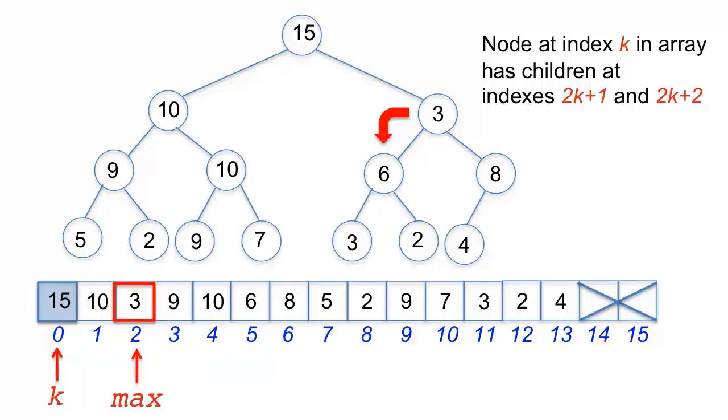Sift-down will now continue one level down in the heap. Correspondingly in the array, the tracking index k will take the place of max in preparation for the next iteration. Repeating this process, l is set to 5 and r is set to 6. The items at these positions are 6 and 8. They're compared, and since 8 is greater, max is set to 6. Then the k item 3 is compared with the max item 8, and since 3 is less, it is swapped with 8.